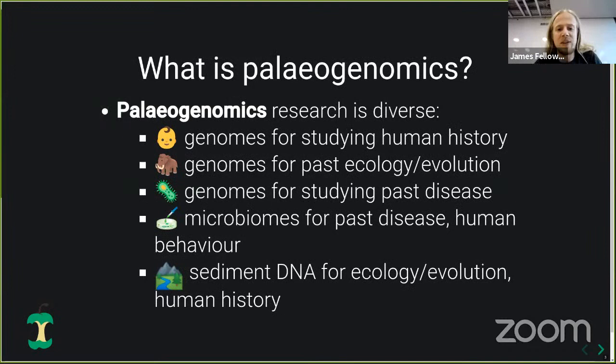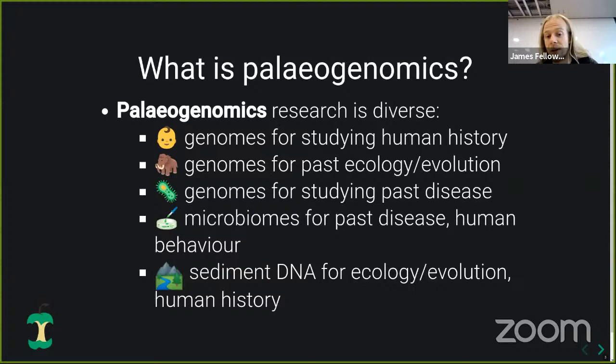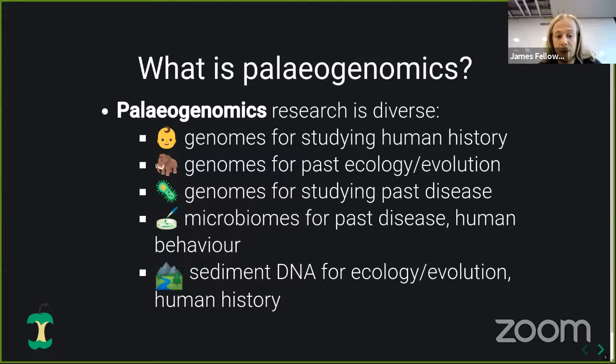So what is paleogenomics? Paleogenomics is actually a very diverse field, all focused on ancient DNA, but with many different facets. There is a lot of work in human genomics for studying past human history. There's also animal, particularly megafauna, paleogenomics for studying past ecology and evolution. There's microbial genomics, particularly for pathogens, which allows us to study infectious disease in the past. More recently, researchers including myself have started studying ancient microbiomes — past disease, chronic disease, human behavior, and sediment DNA for ecology, evolution, and human history.